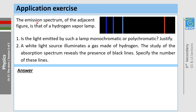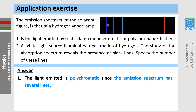To better understand what has been explained, let's solve an exercise. The emission spectrum of the adjacent figure is that of a hydrogen lamp. First question: is the light emitted by such a lamp monochromatic or polychromatic? To answer this question, we should know that monochromatic light has a single frequency and single wavelength. Since the emission spectrum shown here has several lines, the light emitted by such a lamp is polychromatic.